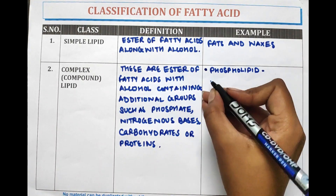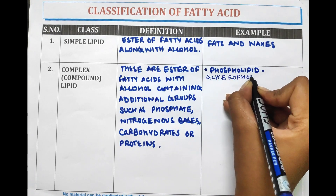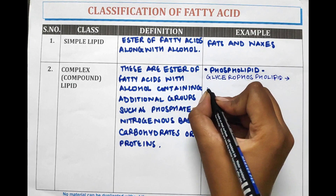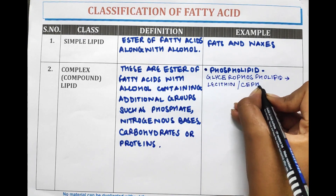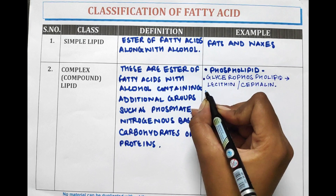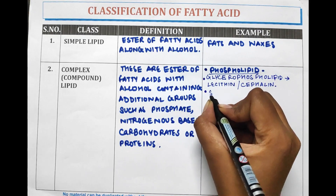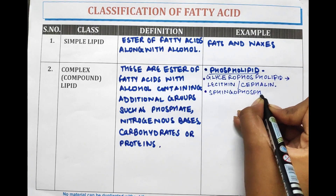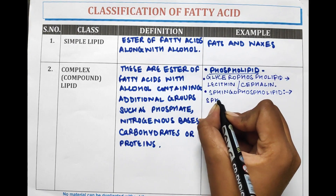Phospholipids include Glycerophospholipids, such as Lecithin and Cephalin. Another example of Phospholipid is Sphingophospholipid. The example of Sphingophospholipids is Sphingomyelin.